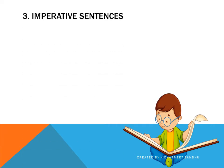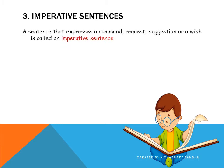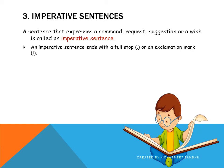Moving on, the next type is imperative sentences. A sentence that expresses a command, request, suggestion, or a wish is called an imperative sentence. An imperative sentence ends with a full stop or an exclamation mark. Please do not get confused when you see an exclamation mark, because you have to try to identify the sentences based on the categories we will be discussing here — that is command, request, suggestion, or a wish.